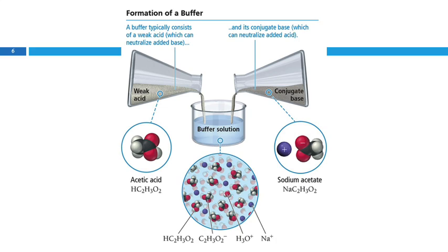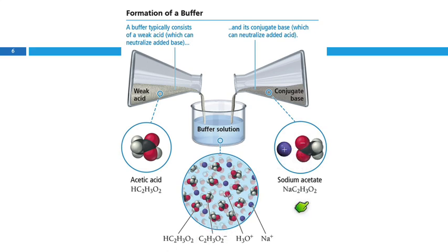So the formation of a buffer: we're going to take a weak acid, such as acetic acid, and add that. Then we're also going to add the salt of its conjugate base. So acetic acid — take off the hydrogen, you get acetate. The acetate ion formula is right there. If we add sodium acetate into this solution, we can increase the acetate concentration. So now we have lots of acetate and lots of acetic acid molecules — acid and base present, and they can respond to whatever we throw at them.